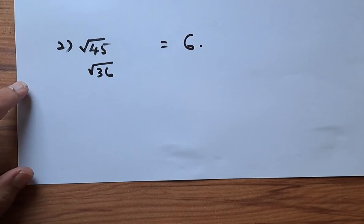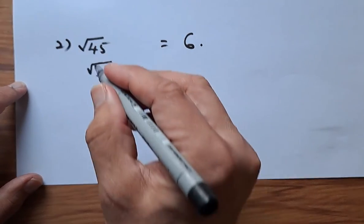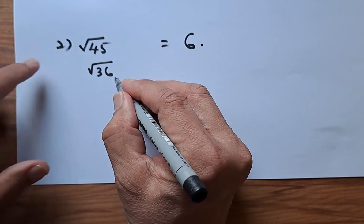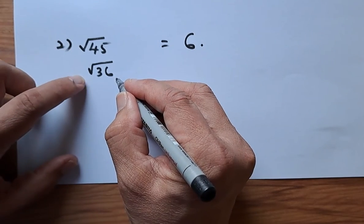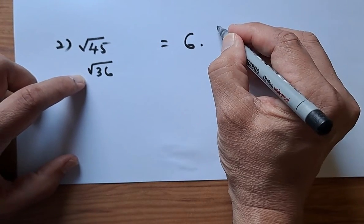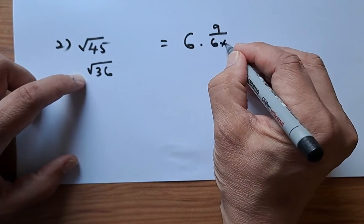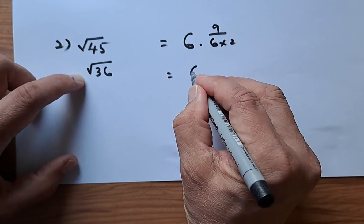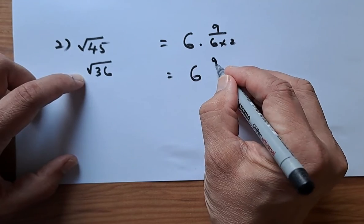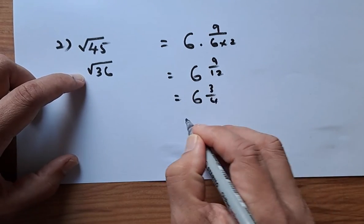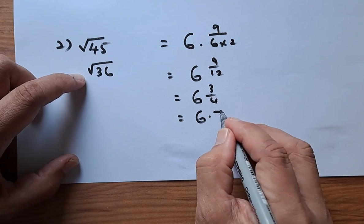The next step, you're going to find the difference between the original number 45 and the square number. So the difference is going to be 9, and you're going to double this number, 6 times 2. So it's going to be 6 and 9 over 12, which is 6 and 3 quarters, which is equivalent to 6 point 75.